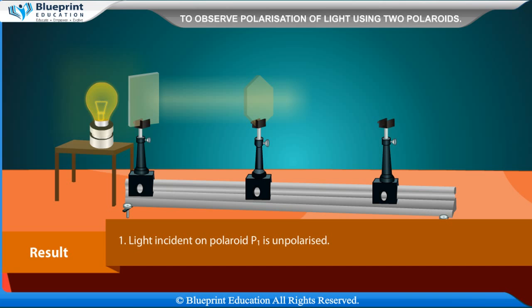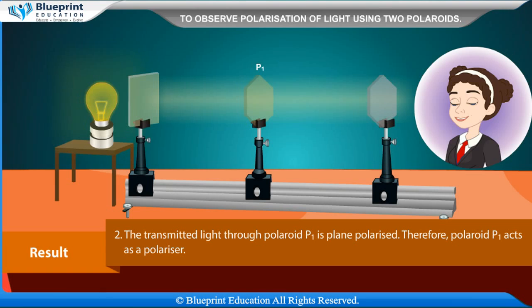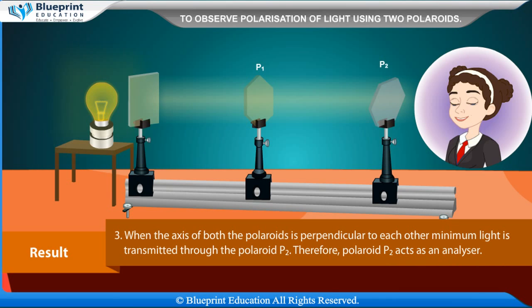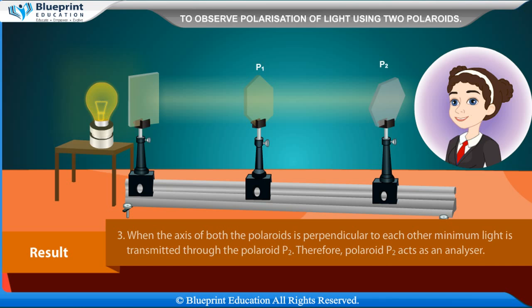Result: Light incident on polaroid P1 is unpolarized. The transmitted light through polaroid P1 is plane polarized. Therefore, polaroid P1 acts as a polarizer. When the axis of both polaroids is perpendicular to each other, minimum light is transmitted through polaroid P2. Therefore, polaroid P2 acts as an analyzer.